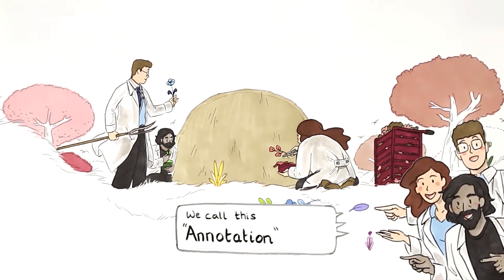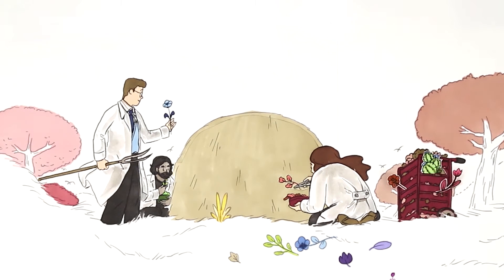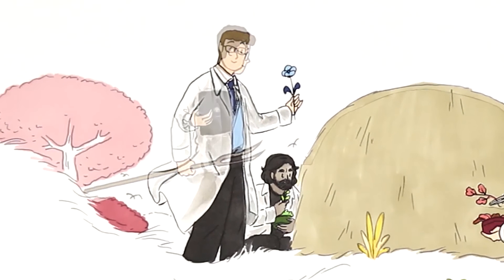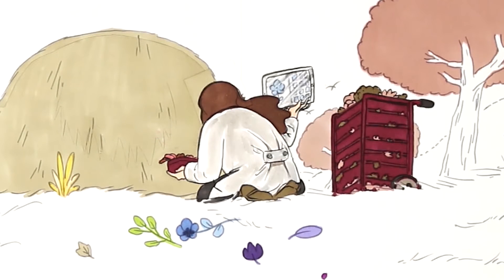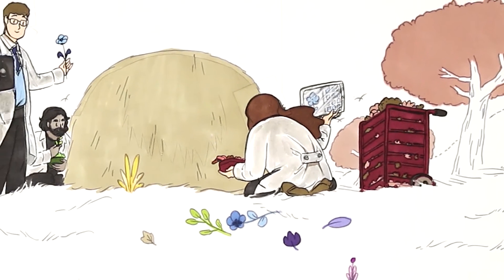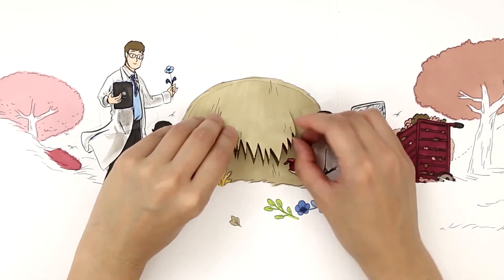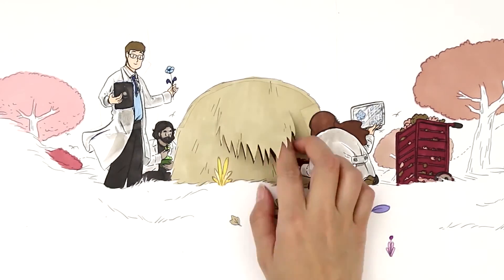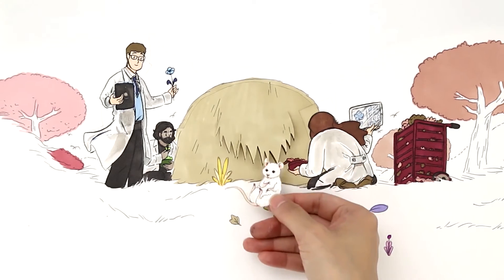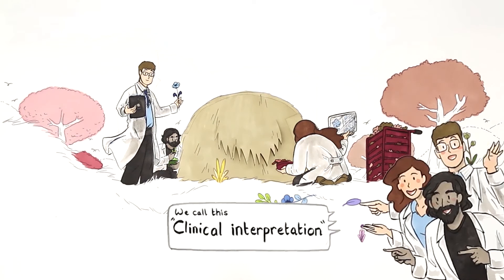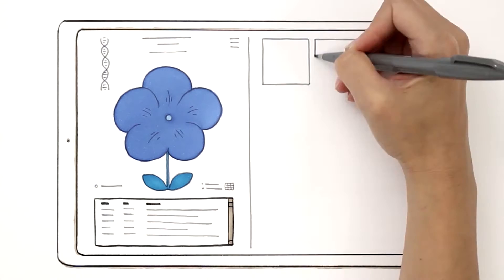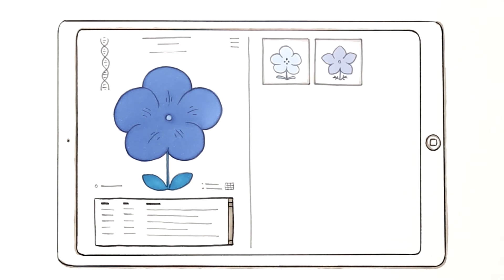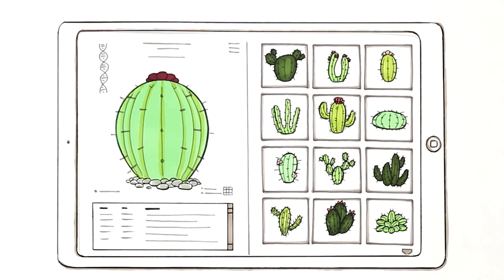They pull out hundreds of potential glitches, so they need to discard some. They constantly refer to vast online encyclopedias to help them, and they use the information about Lily's symptoms and medical history too. Out go the glitches that loads of people have with no problem. Out go the glitches that they know definitely aren't associated with Lily's condition. For many rare diseases, there are things called panels, or gene lists, which contain all the glitches already known to cause them.